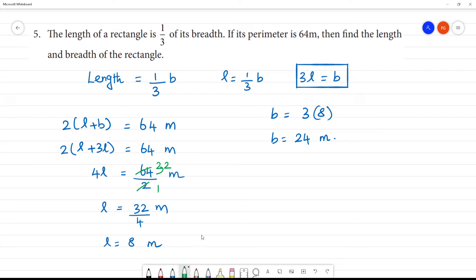Now check. Perimeter of the rectangle, 2 into l plus b is the perimeter. Now 2 into length, l is 8, breadth is equal to 24. So 2 into 8 plus 24 is 32, 32 multiplied by 2 is 64. 64 meter is our answer.